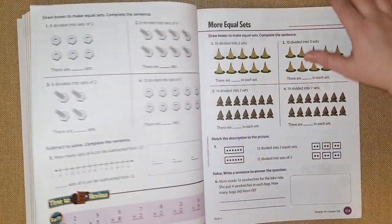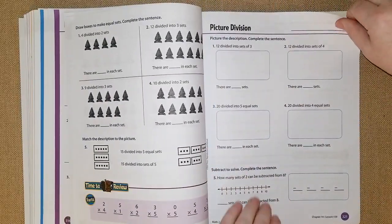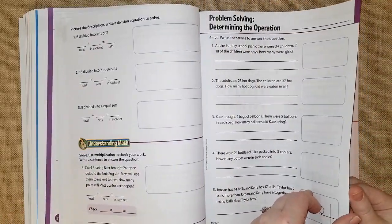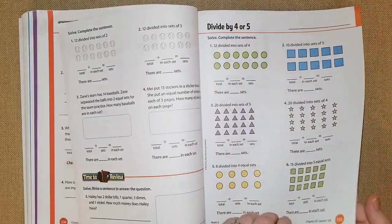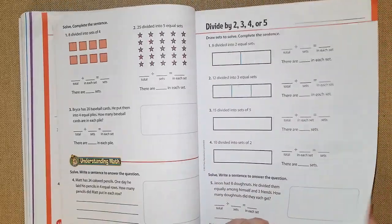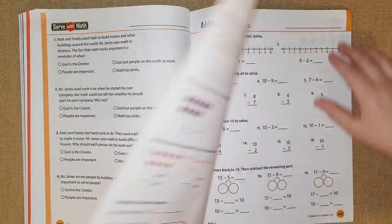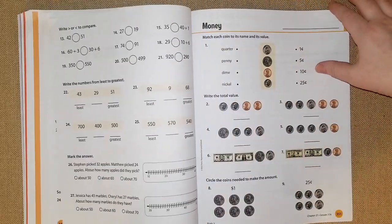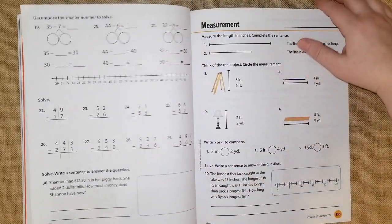Chapter 19 they're talking about equal sets, picture division, write a division equation, problem solving. Chapter 20 they're dividing by two and three and four and five. And chapter 21 I think they're going over all of the things that they learned in the whole book and doing a review, so this would be a good way to see if they grasped all the concepts.